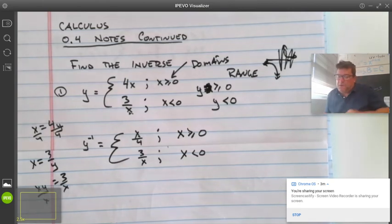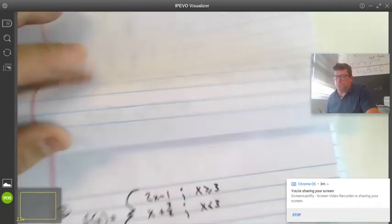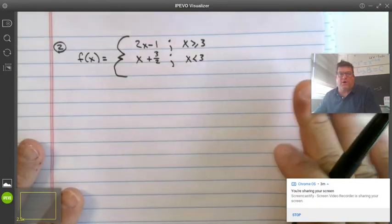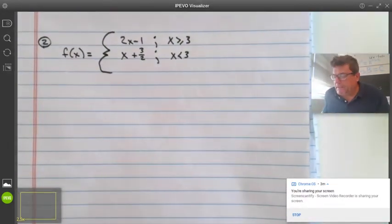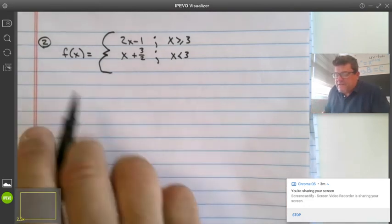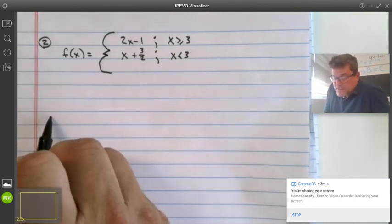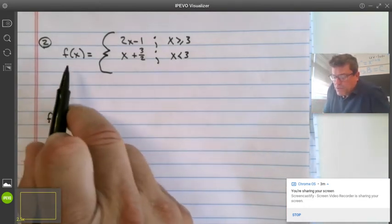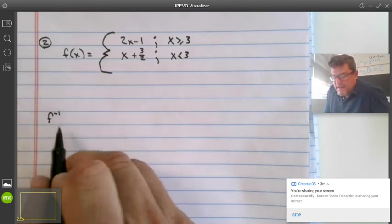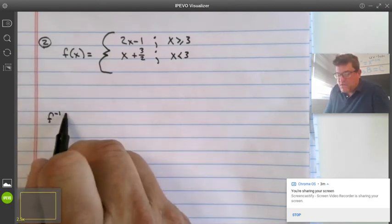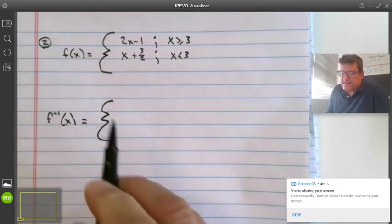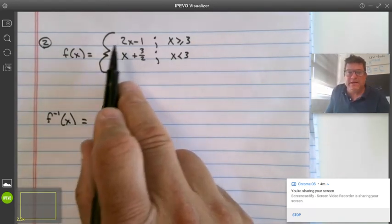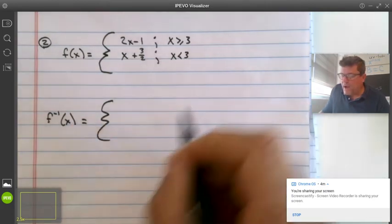Here's another sample. Pause the video if you want to take notes on this or just watch. Let's find the inverse. If the original is called f, then the inverse is going to be called f inverse of x. I always like to do the easy parts first, and that would be switch x and y and solve for y.